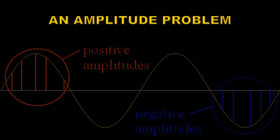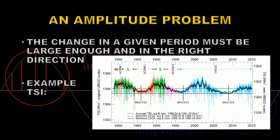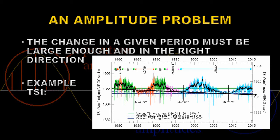We not only have a timing problem, we also have an amplitude problem. In order to explain global warming, the change in a given period must be large enough to explain the amount of heating we're seeing, and also must be going in the right direction — and unfortunately that is not the case. Let's take total solar radiance as an example. Here's a plot of total solar radiance over the last 40 years, which is a measure of how much energy is coming from the Sun and hitting the Earth. Over that period you can see there's been a general decline. Comparing the peaks during solar maximum and similarly the minima confirms this. What would those curves have to look like to explain global warming? There's a huge shortfall between what we're actually observing and what is needed to explain global warming. So the Sun cannot be the source of this increased temperature.